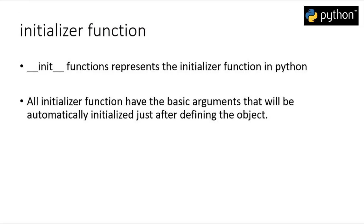Python provides us an initializer function to automatically create common attributes such as name, price, and quantity every time we instantiate or create an object of our class. This initializer function is known as the init method, written as two underscores followed by init followed by two underscores. Within its parameters we pass a mandatory parameter called self. This self represents the object being instantiated — every time we create an object, the class calls this initializer function, and self is replaced by the variable name in which our object is stored. Let's head over to Python and understand this in detail.